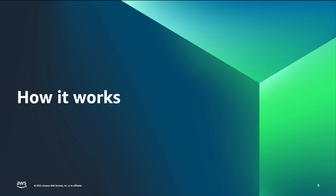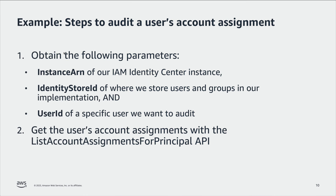Let's look at a concrete example of how to audit the AWS account assignment for a specific user. The process to investigate a group or application assignment is similar. We will need to obtain some information first to build the necessary parameters for the list account assignments for principal API call. In particular, we need to know the instance ARN of our IAM Identity Center instance, the identity store ID of our implementation, and the user ID of a specific user we want to audit. The instance ARN and identity store ID are readily available from the SSO Admin APIs, and the user ID can be obtained from the identity store APIs.